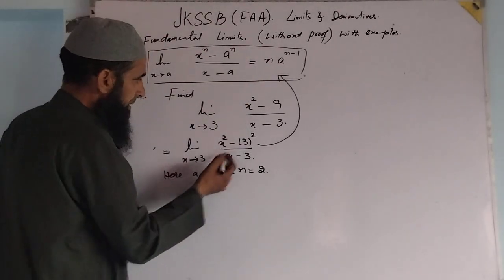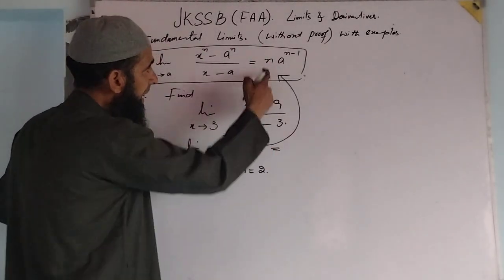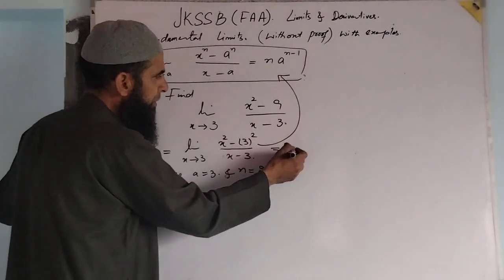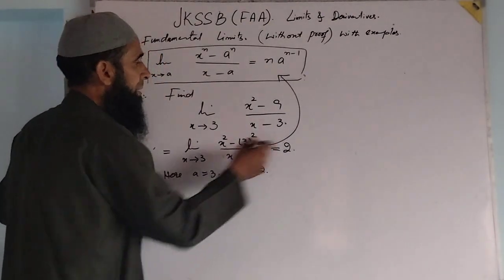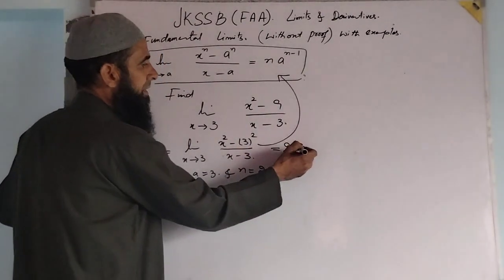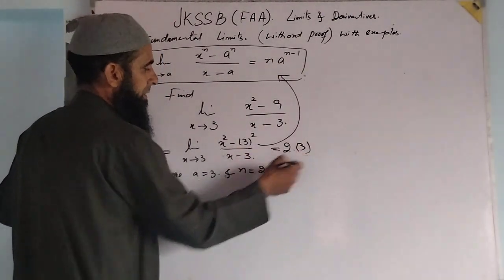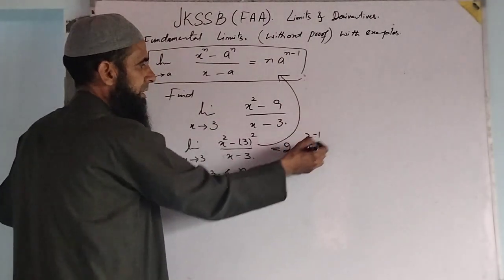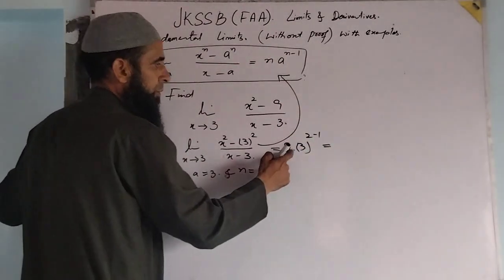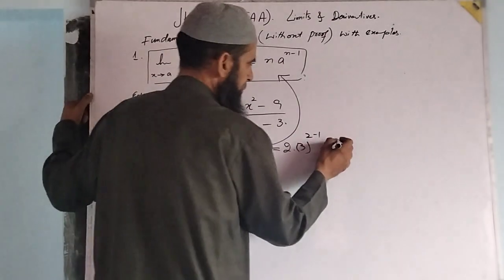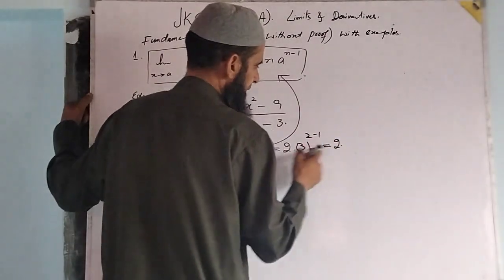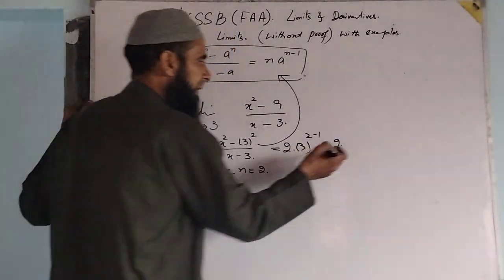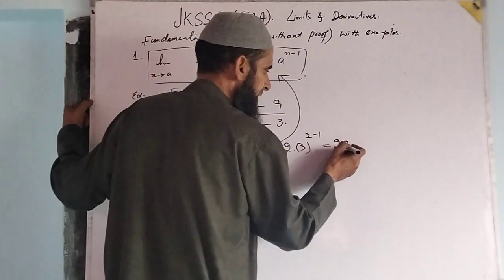The limit is equal to n into a raised to power n minus 1. Here n is 2 and a is 3, so it is 2 into 3 raised to power 2 minus 1, that is 3 raised to power 1, which equals 2 into 3.